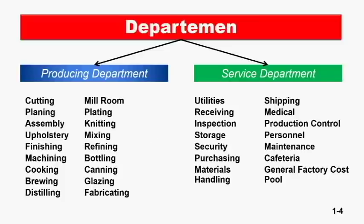Kaitannya dengan penghitungan harga pokok produksi: yang selama ini kita pelajari khususnya pada saat belajar proses costing adalah departemen-departemen yang ada di producing department. Semua harga pokok akan dihitung di sana, karena memang bahan baku dan barang jadi ada di sini. Sementara di service department tidak ada bahan baku; yang ada mungkin biaya SDM dan upah buruh tidak langsung, karena tidak langsung terkait dengan kegiatan produksi dan overhead.